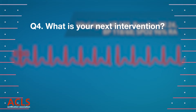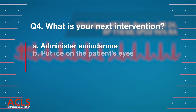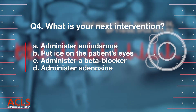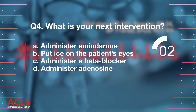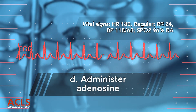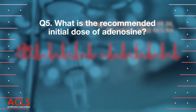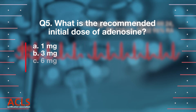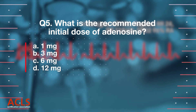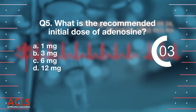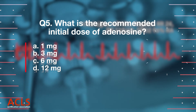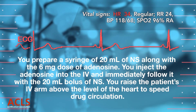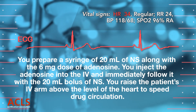What is your next intervention? Administer adenosine. What is the recommended initial dose of adenosine? The initial dose recommended is 6 mg.